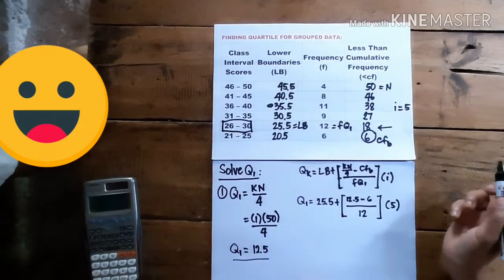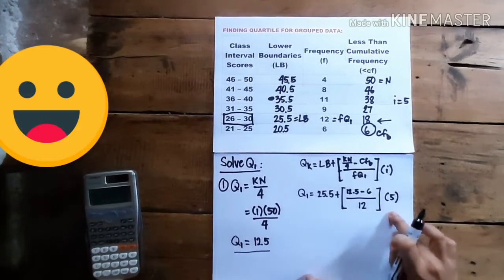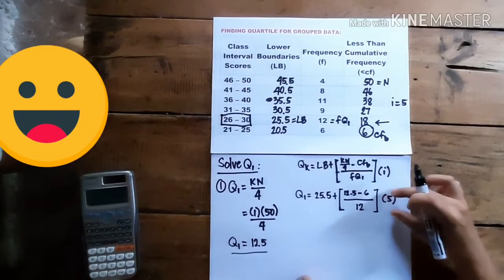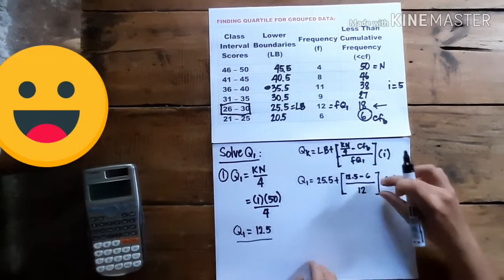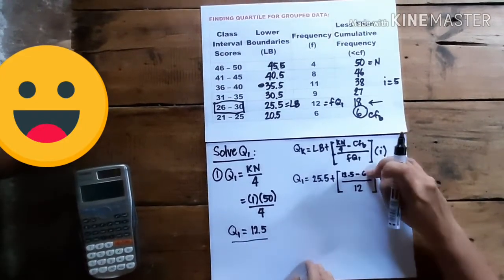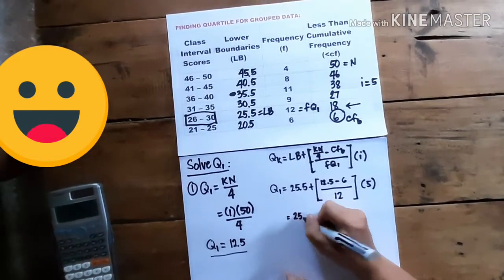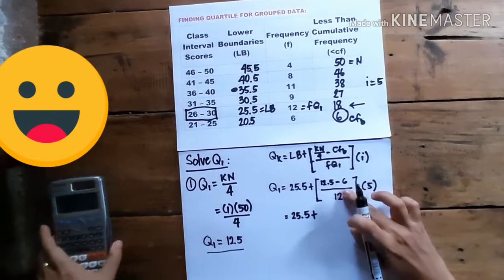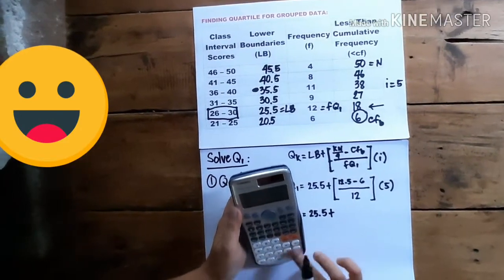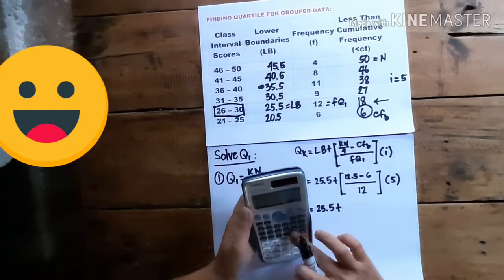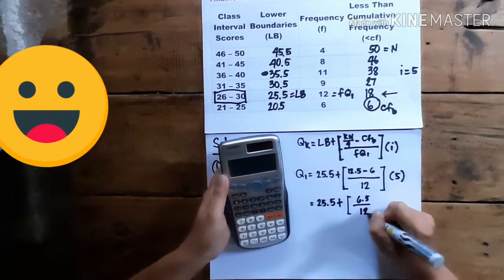Now, step-by-step solution. This is more complicated in this area, that means we should do this first. So we just copy this. Now, in this part, of course, we do what's in the bracket first, and since this is division, we do the subtraction first. So we have, copy the 25.5 plus, again, subtract the numerator first. So, 12.5 minus 6, and this is equivalent to 6.5 divided by 12.